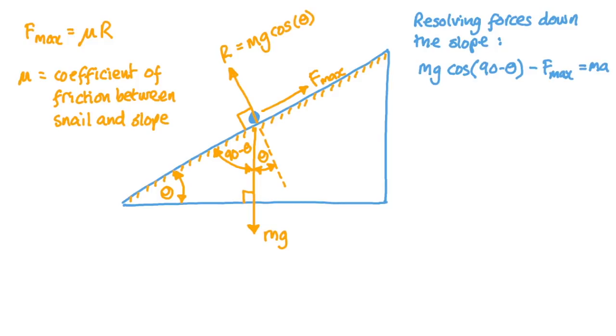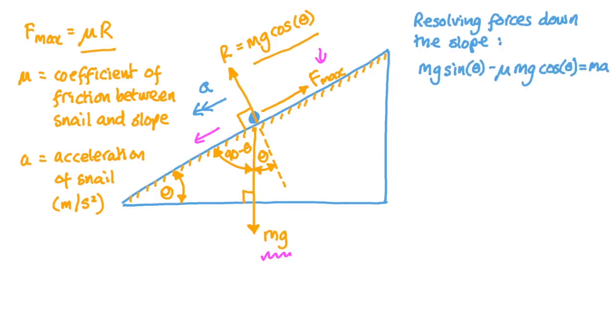So in order for the snail to slide down the slope, the component of the weight force acting down the slope must be bigger than this F max force here. And when that happens, we get a constant acceleration of, let's call it a, down the slope. Newton's second law tells us that the resultant force acting on the snail down the slope is equal to the mass of the snail times its acceleration. So we can see that mg cosine of 90 minus theta minus F max is equal to the mass of the snail times its acceleration. But cosine of 90 minus theta is the same as sine of theta and F max is equal to μ times R and R is equal to mg cos theta. Now we can cancel out the m's on either side of the equation. Now we can see that the constant acceleration of the snail down the slope is this expression here, which is independent of the mass of the snail, which is mildly interesting.